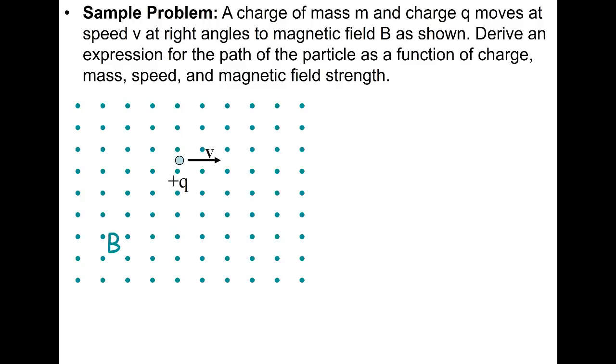So the first thing that we want to do is try to think about the direction of the magnetic force. Remembering that the magnetic force as a vector is equal to q v cross B, we use our fingers and point them to the right for the right-hand rule. Our palm must point out of the page, coming towards us, and our thumb will therefore be pointing downwards. So the direction of this force is downwards.